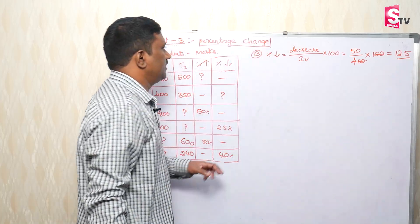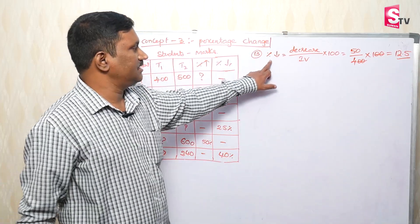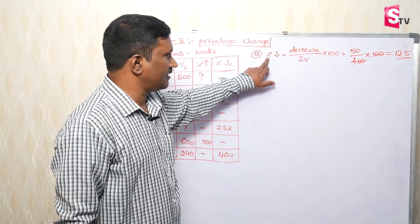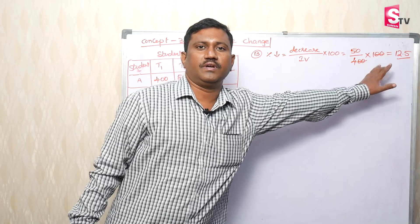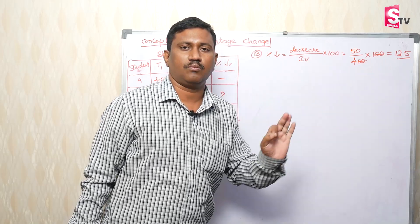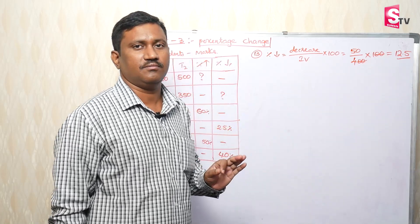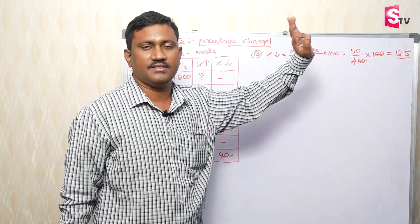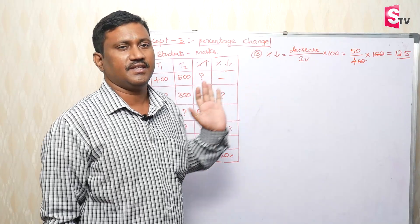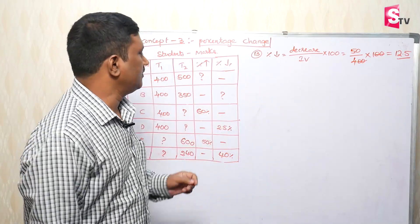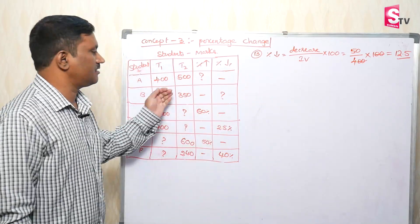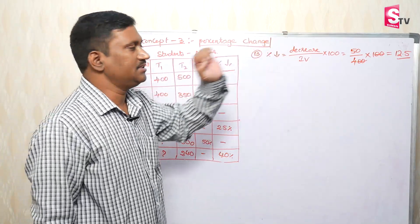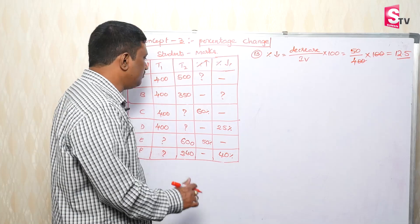So the percentage decrease is 12.5%. This is the B and B comparison result.